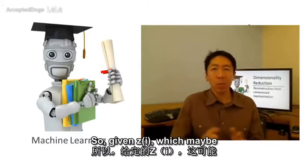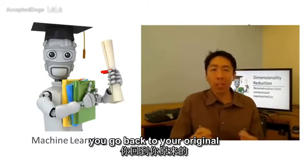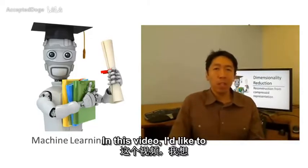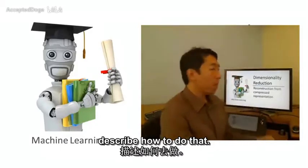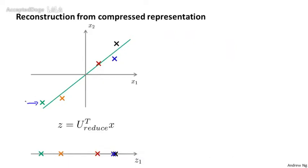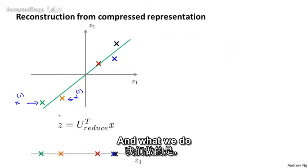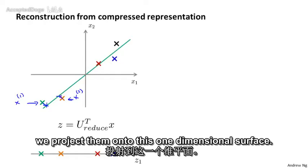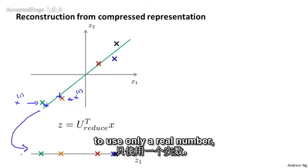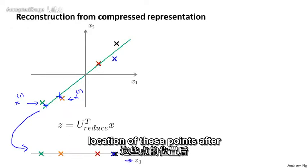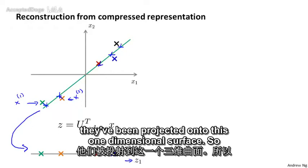So given z_i, which may be a hundred-dimensional, how do you go back to your original representation x_i, which was maybe a thousand-dimensional? In this video, I'd like to describe how to do that. In the PCA algorithm, we may have an example like this. So maybe that's my example x1 and maybe that's my example x2. What we do is we take these examples and we project them onto this one-dimensional surface. Then we need to use only a real number, say z1, to specify the location of these points after they've been projected onto this one-dimensional surface.